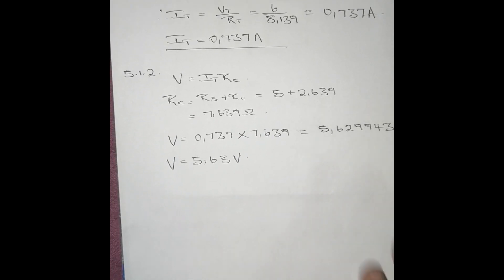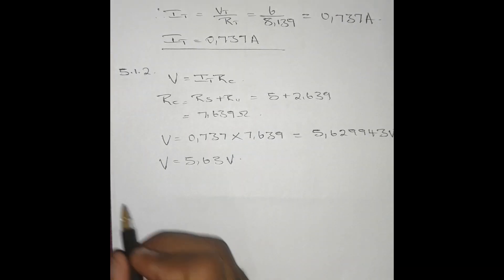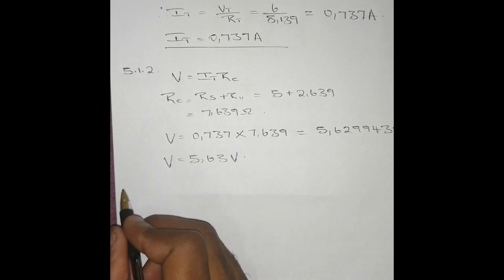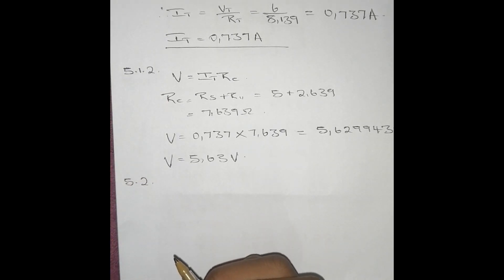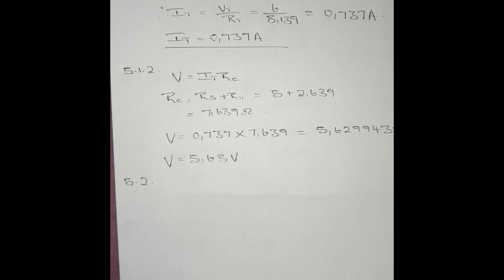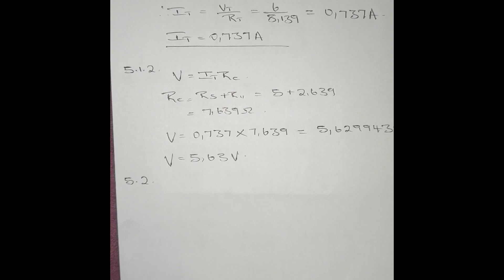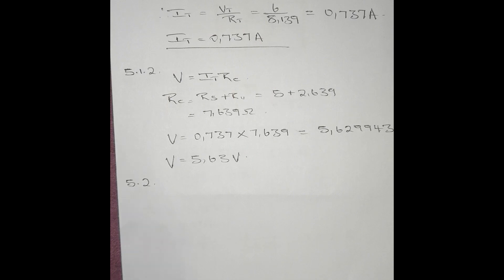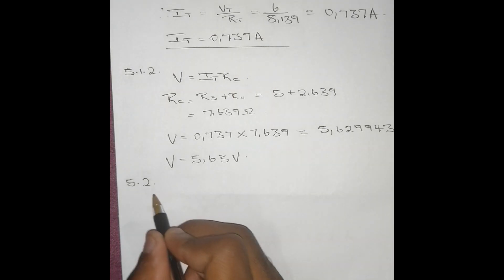That is question 5.1.2. Now moving to question 5.2: the name plate of a domestic electric heater indicates 220 volts and 2500 watts. If the cost of electricity is 18 cents per kilowatt-hour, calculate the cost of having the heater on for 10 hours a day for one year.